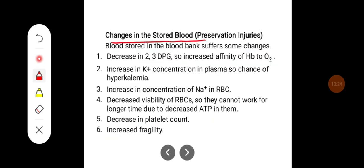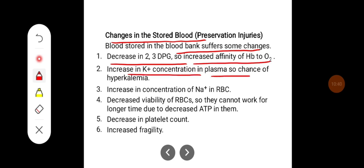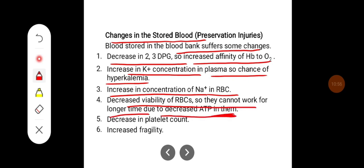Changes which occur in stored blood: blood stored in the blood bank suffers some changes. There is a decrease in 2,3-DPG, so there is an increase in the affinity of hemoglobin to oxygen. There is an increase in potassium concentration in plasma, which may cause hyperkalemia, and an increase in sodium concentration in the RBCs. There is decreased viability of RBCs due to decreased ATP, and there may be a decrease in platelet count.